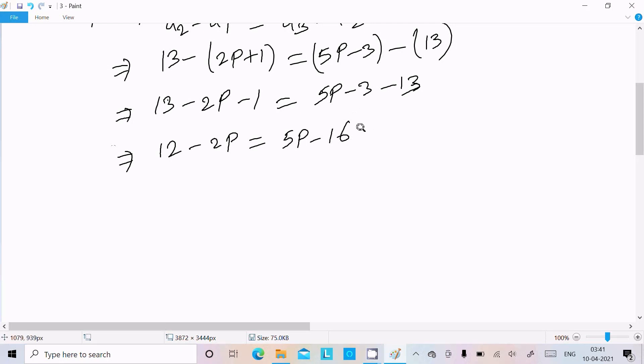And here, what you need to do: so here this 16 I am going to move on the left. So this is 12 here minus 2p, this convert into plus. Now 5p, and this move on the right, so this become 2p, here 5p plus 2p that is 7p, and 16 plus 12 that is 28.